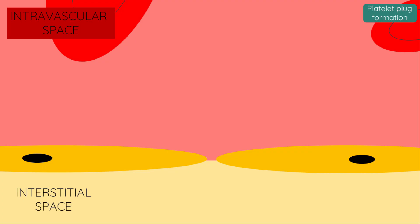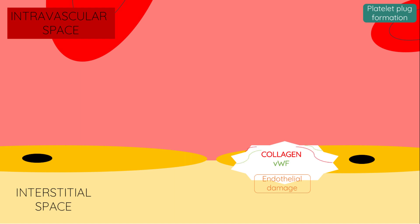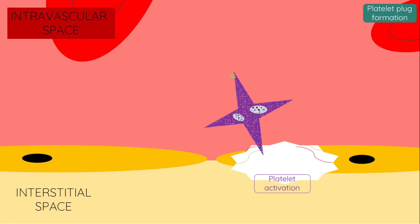When the lining of a blood vessel is damaged, this exposes collagen and von Willebrand factor, which causes circulating platelets to rush to the site of damage and bind. This binding causes activation of the platelet, which involves a change in shape and the release of granules containing chemicals, one of which is thromboxane A2.